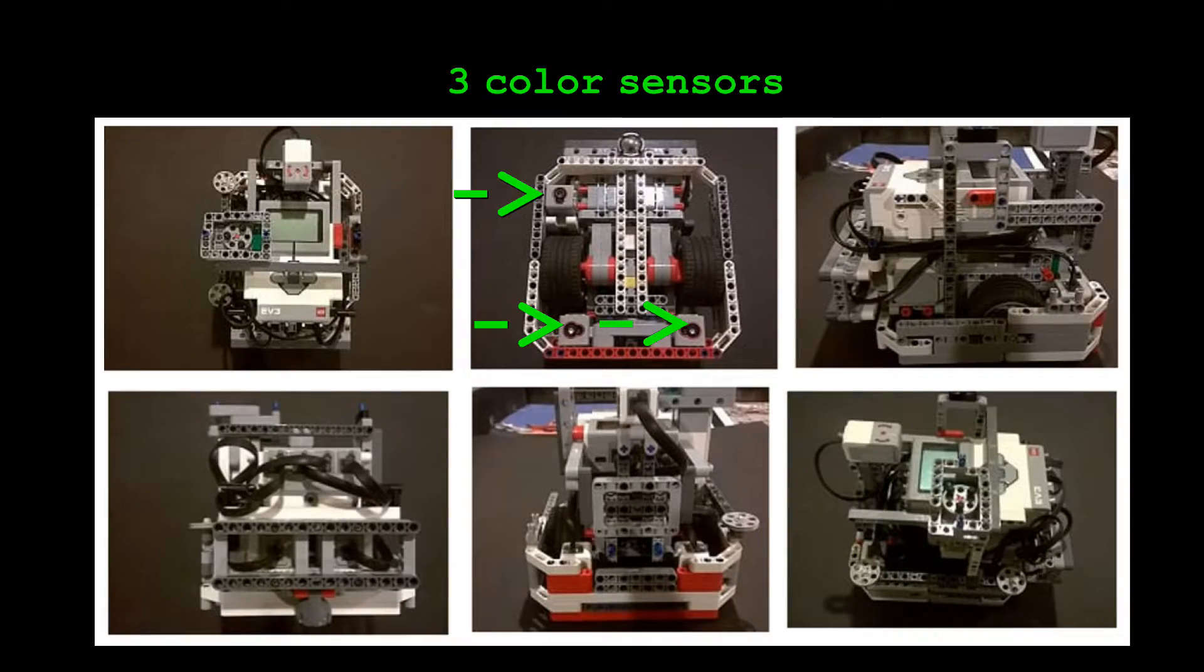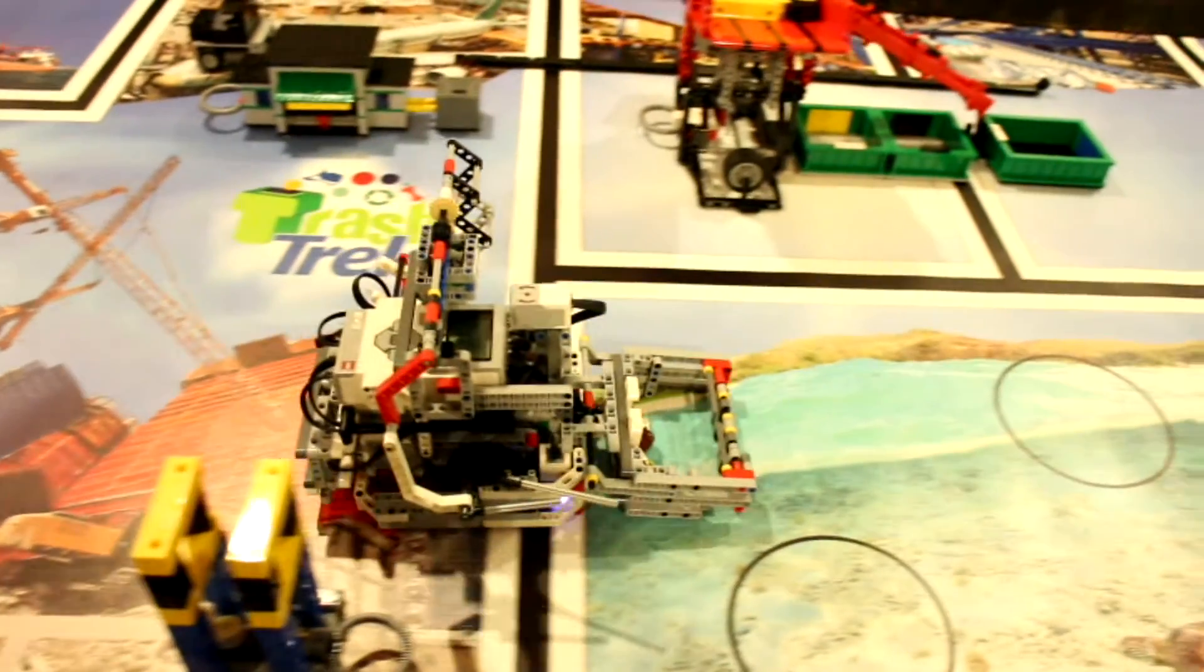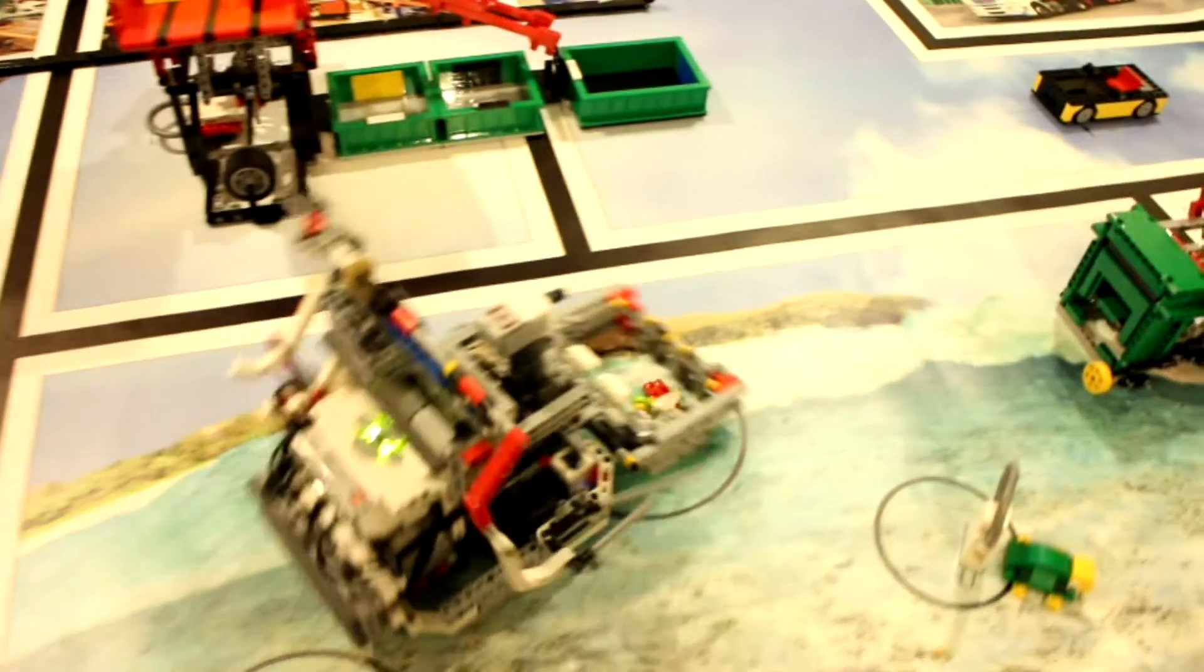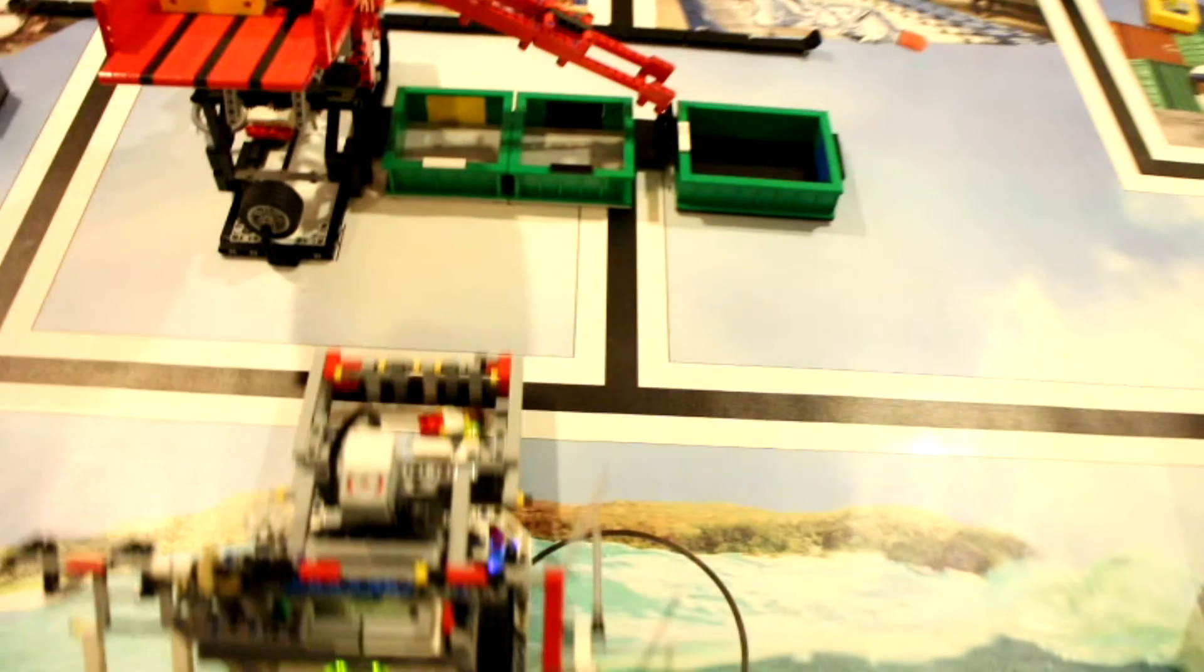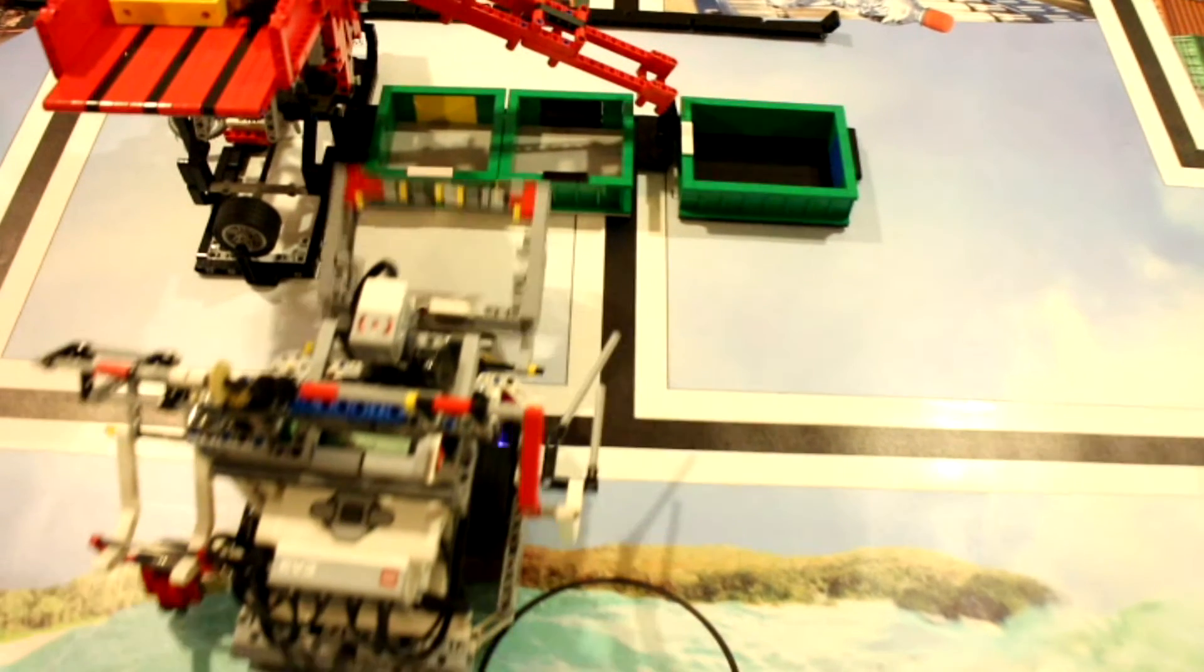Detect lines: We use the color sensor to detect lines. Then, from the black line, the robot moves forward for a fixed distance and makes a left turn. After the turn, the robot moves forward for another fixed distance and then completes the mission.